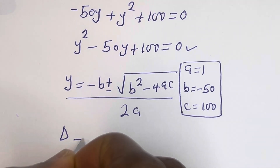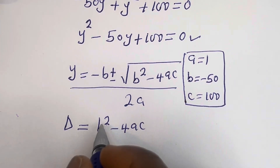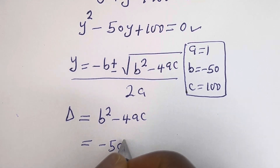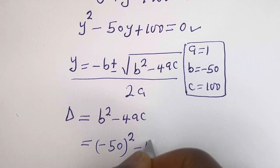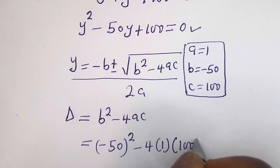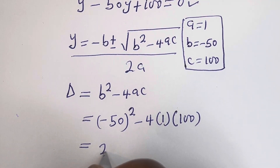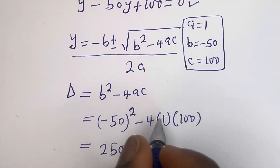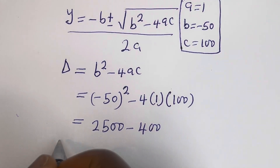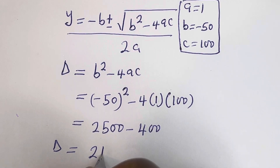Then the discriminant d is equal to b squared minus 4ac. That is: (minus 50) squared minus 4 multiplied by 1 multiplied by 100. This equals 2500 minus 400. So the discriminant d is equal to 2100.